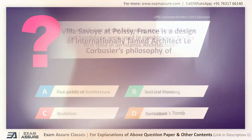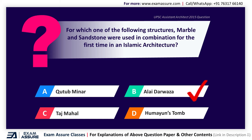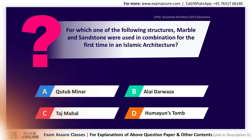Next question. For which of the following structures were marble and sandstone used in combination for the first time in Islamic architecture? Option A: Qutub Minar, Option B: Alai Darwaza, Option C: Taj Mahal, Option D: Humayun's Tomb. The correct answer is Option B, Alai Darwaza.